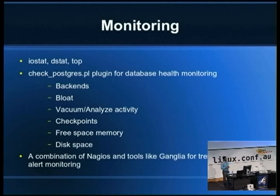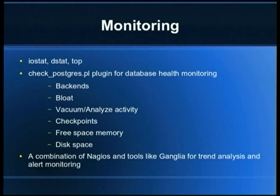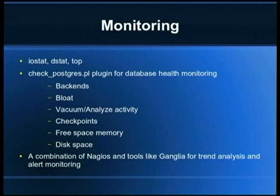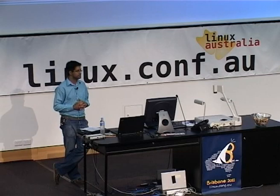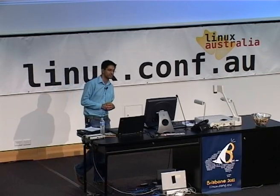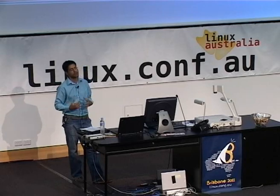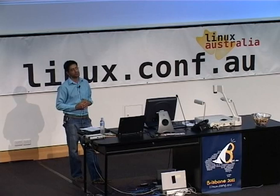For monitoring, use normal Unix commands like iostat, dstat, and top — put their outputs into a database and do trend analysis on them. Also, the check_postgres.pl script is a very useful Nagios-based plugin for production Postgres servers: it can automatically check for bloat, checkpoints, free space, and alert admins about problems beforehand. Use a combination of Nagios and tools like Ganglia to get proper trend graphs for your database server performance.